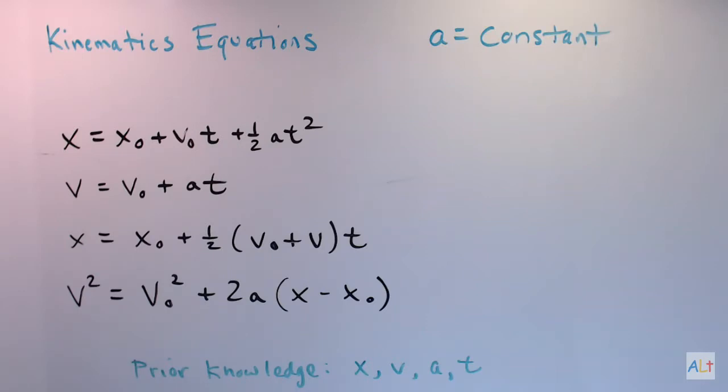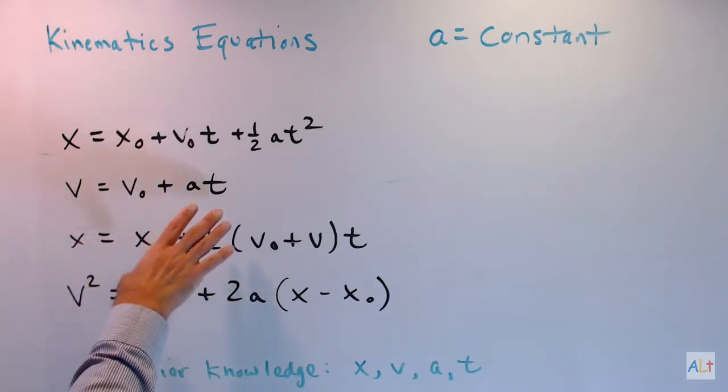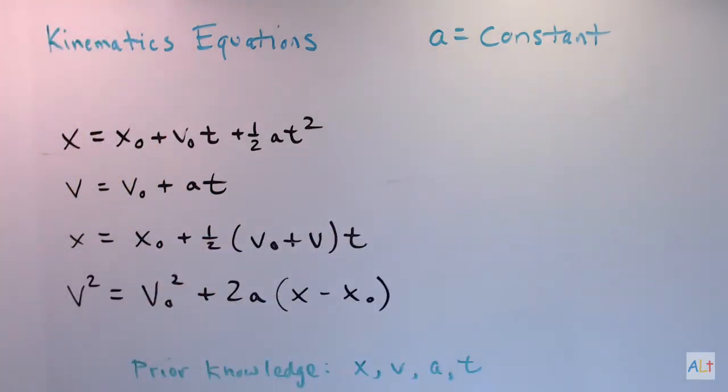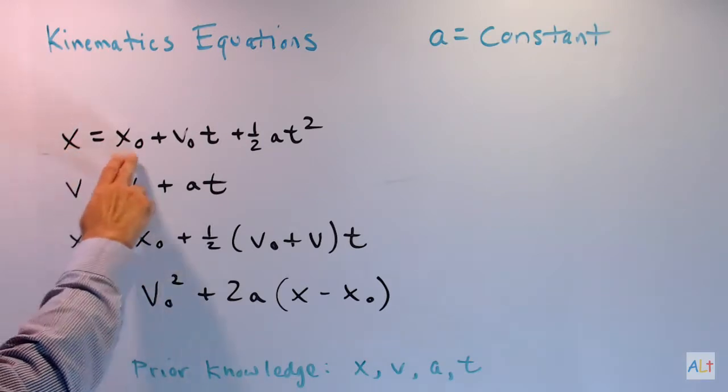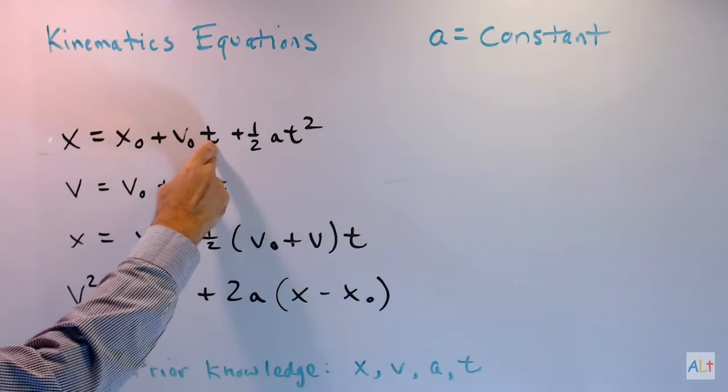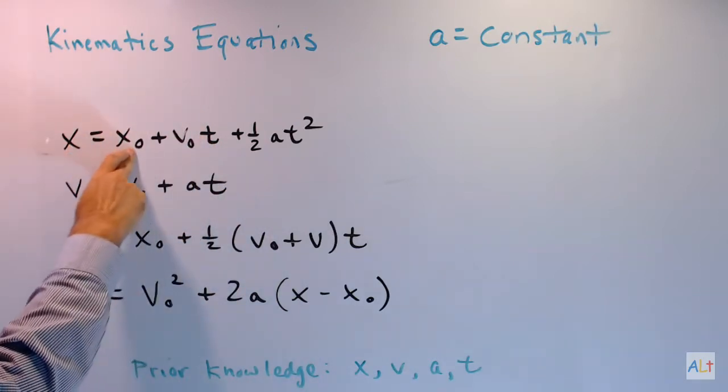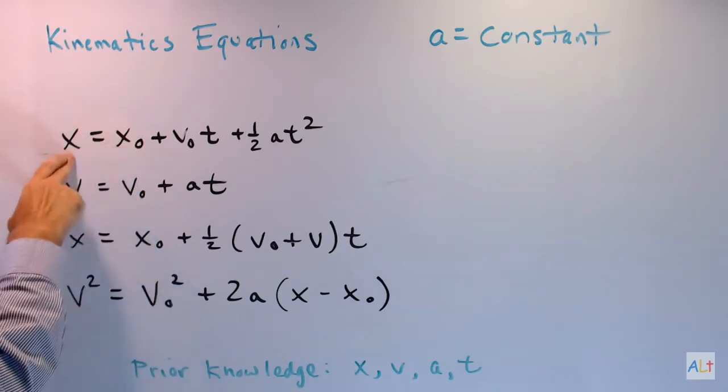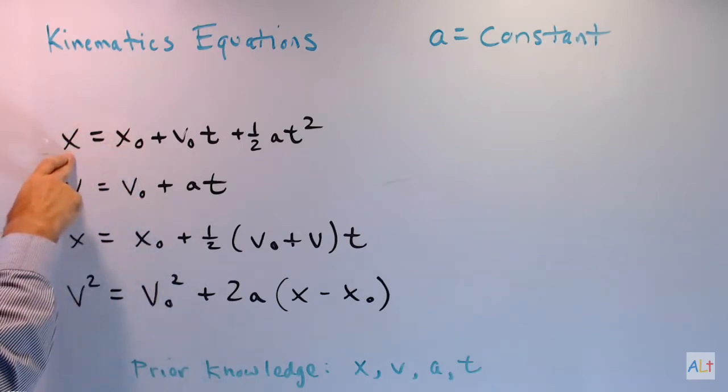The most important thing to know about these equations is that they require your acceleration to be constant. If the acceleration is not constant, then you have to do something else entirely to solve the problem. Maybe do conservation of energy or something like that. Now, very briefly, let me remind you that this is position as a function of time, and when time is equal to zero, then the position is simply equal to x0. I'll call this the initial position when t equals zero, and then this will be the final position at some later time.